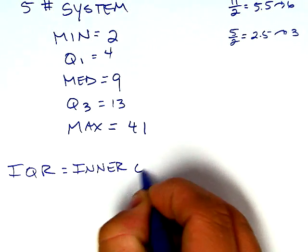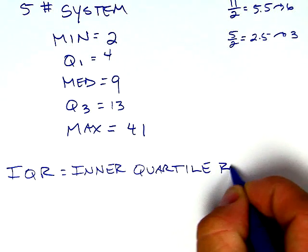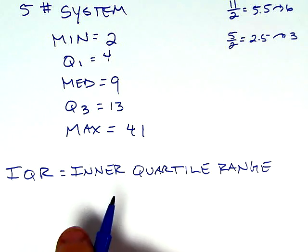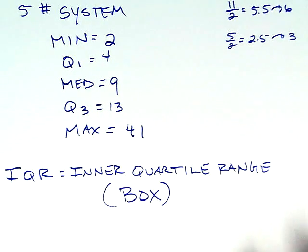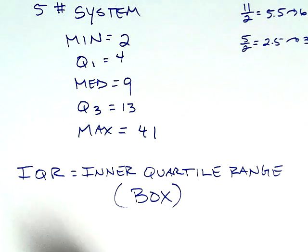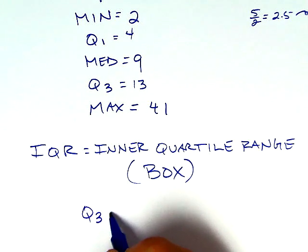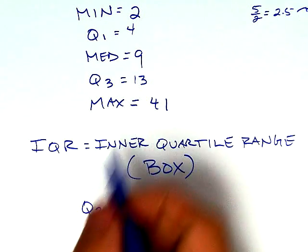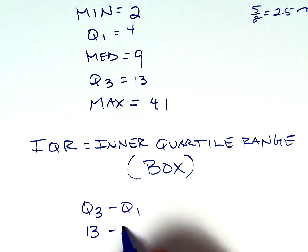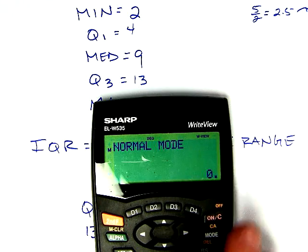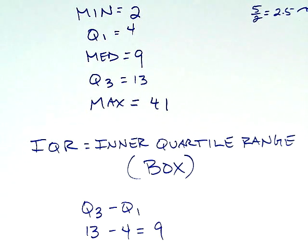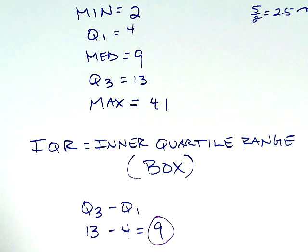For the outlier test the next thing we need to look at is the IQR. This stands for the inner quartile range. This is the box in the box and whisker. How do we make the box? We make it between Q3 and Q1. So the inner quartile range—you take Q3 or the larger number and subtract Q1, the smaller number. Q3 is 13 and Q1 is 4, so 13 minus 4 is 9. That is our IQR—9, the size of the box.